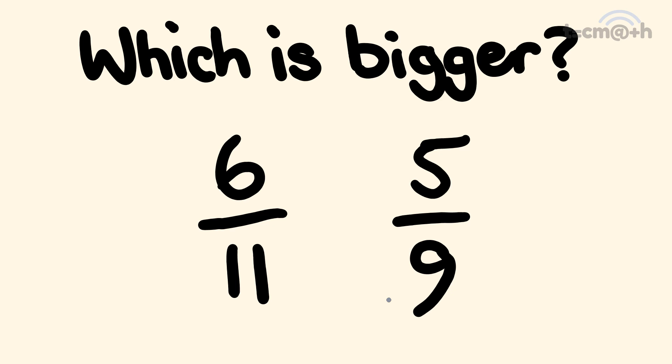Did you work out that the biggest of our two fractions is 5 over 9? If you did, congratulations, that is the correct answer. But if not, don't worry, I'm going to show you right now how you can instantly work out which is the largest out of two fractions.